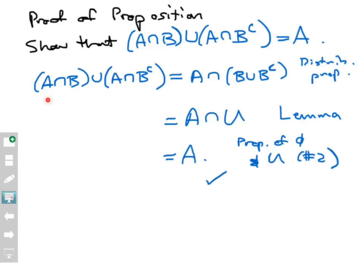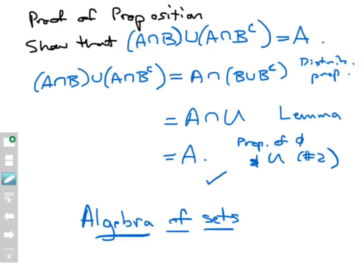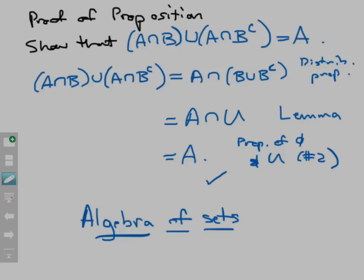And that proves what I wanted to show. That seems a lot easier, doesn't it? We don't have to do a choose-an-element proof here. We can use what we're going to refer to as the algebra of sets method — because it feels like you're doing algebra with sets rather than variables. Using the properties we built up, I can just chain them together and get what I want instead.